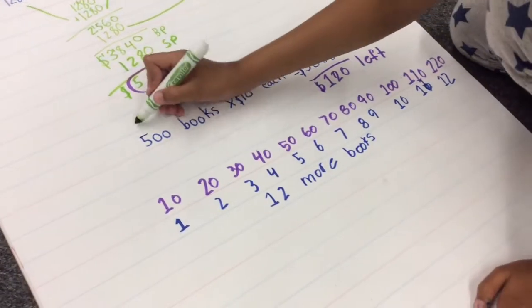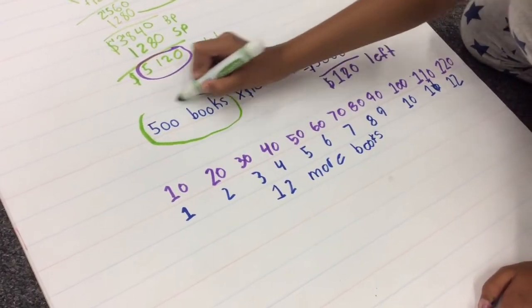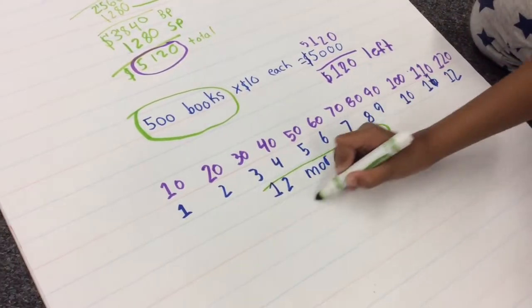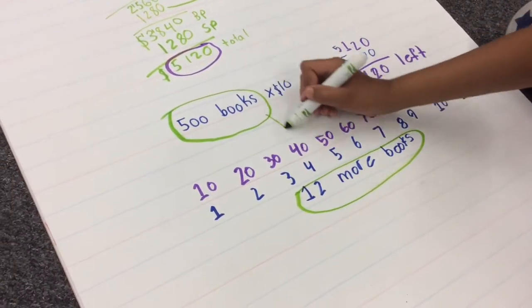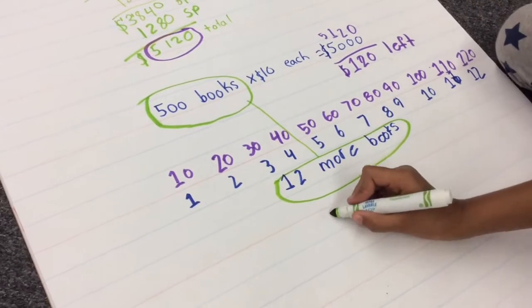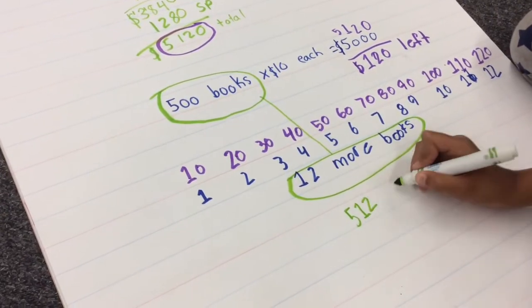All together, five hundred and twelve books could be bought with the five thousand one hundred and twenty dollars collected from selling apple pies.